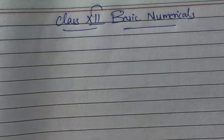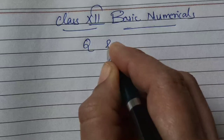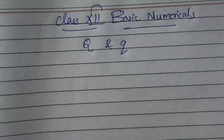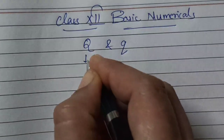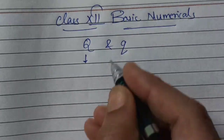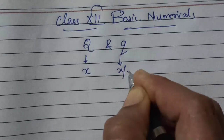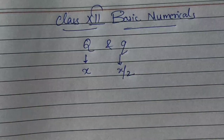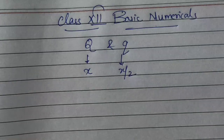Now one of my questions says that two point charges are there. One point charge is Q and another point charge is small q. It is said in the question that two point charges Q and small q are placed at the distance x and x by 2 from a third charge.